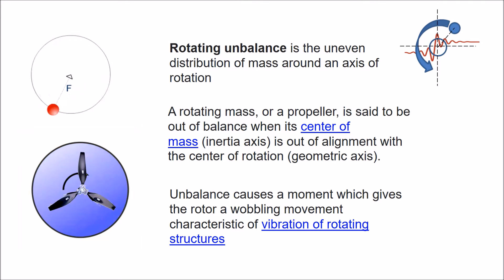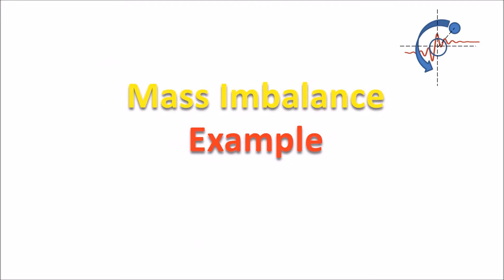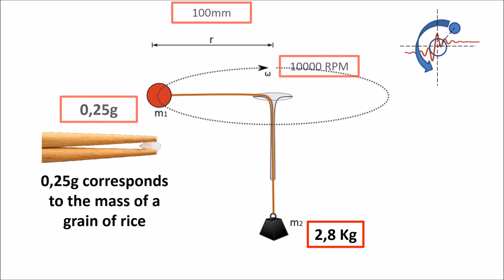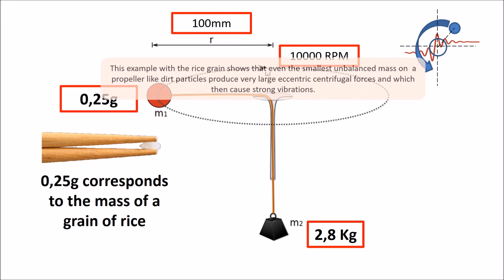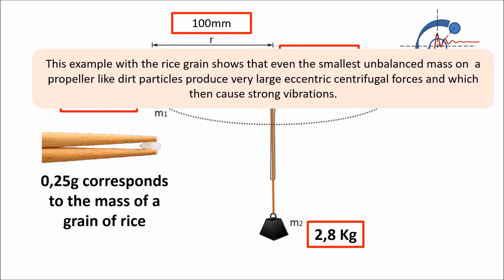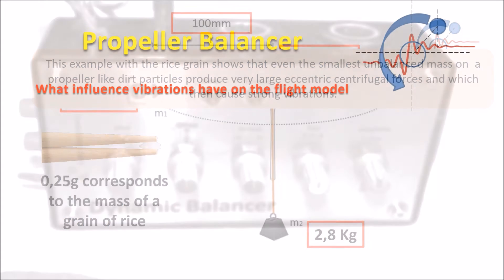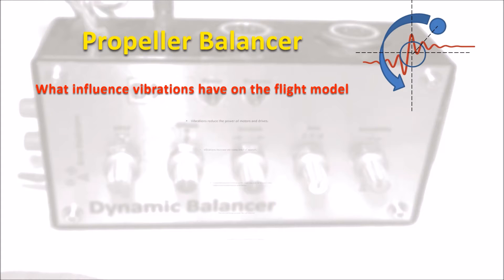And this effect can be measured. Here is a simple experiment. We let a rice grain rotate on a circular path with a radius of 10 centimeters at 10,000 revolutions per minute. The resulting centrifugal force would then correspond to a weight of 2.8 kilograms. This example with the rice grain shows that even the smallest unbalanced mass on a propeller, like dirt particles, produces very large eccentric centrifugal forces, which then cause strong vibrations.